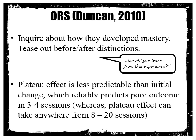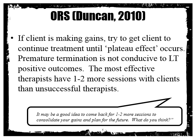The plateau effect is less predictable than initial change, which reliably predicts poor outcome in three to four sessions, whereas the plateau effect can take anywhere from eight to twenty sessions. If you imagine a line graph, the client will hopefully increase their score on the Outcomes Rating Scale over time, and at some point they'll hit their sweet spot where they're not going to change up or down — they've hit their plateau, meaning more sessions do not result in any change in scores. When you reach the plateau effect, that's when you should be looking at termination for clients who have improved. Try to get the client to continue treatment until the plateau effect occurs.